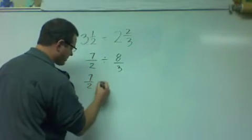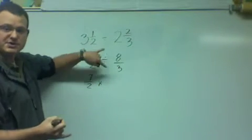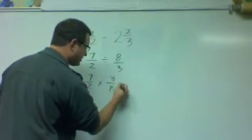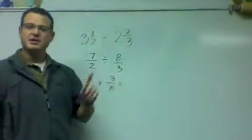So, 7 halves multiplied by the reciprocal of 8 thirds, 3 eighths. And now we can multiply straight across.